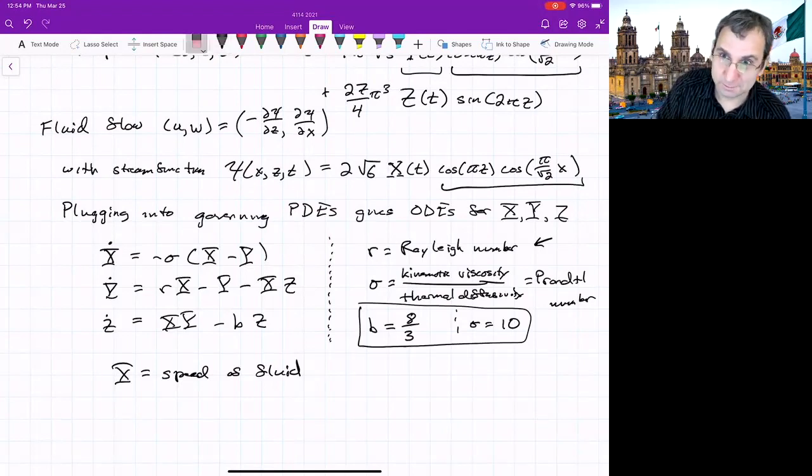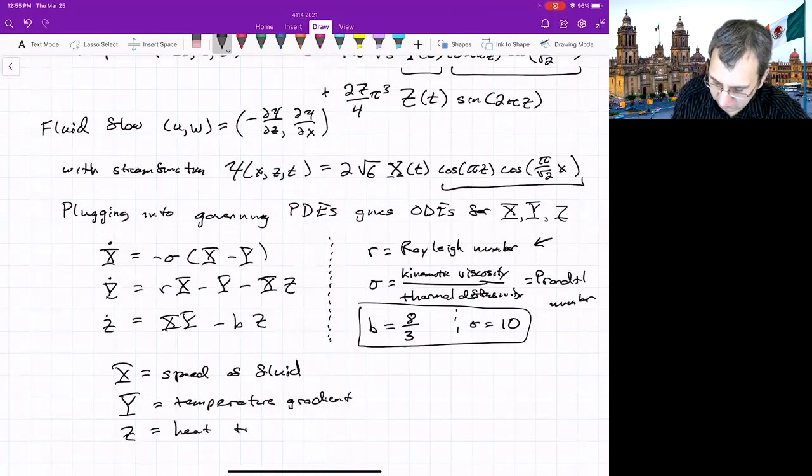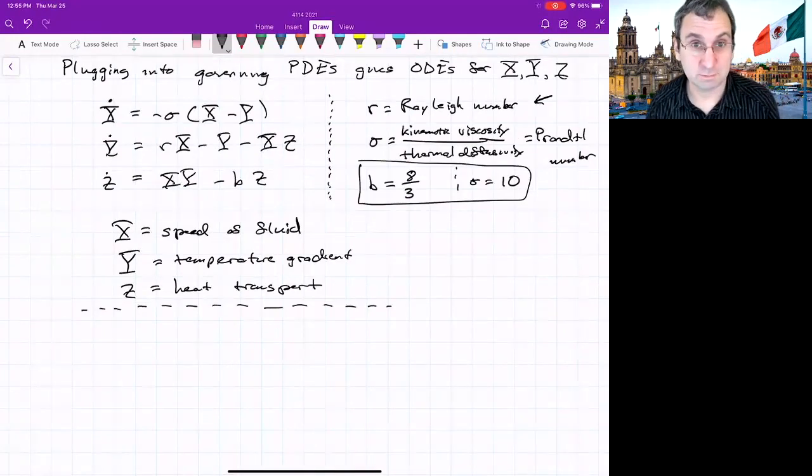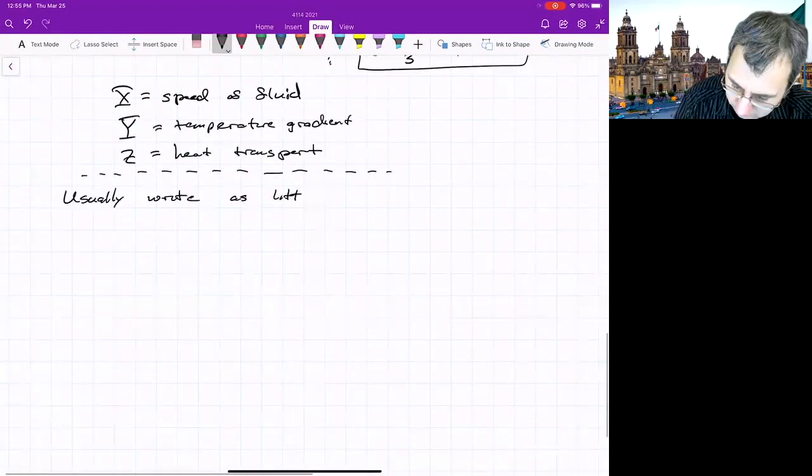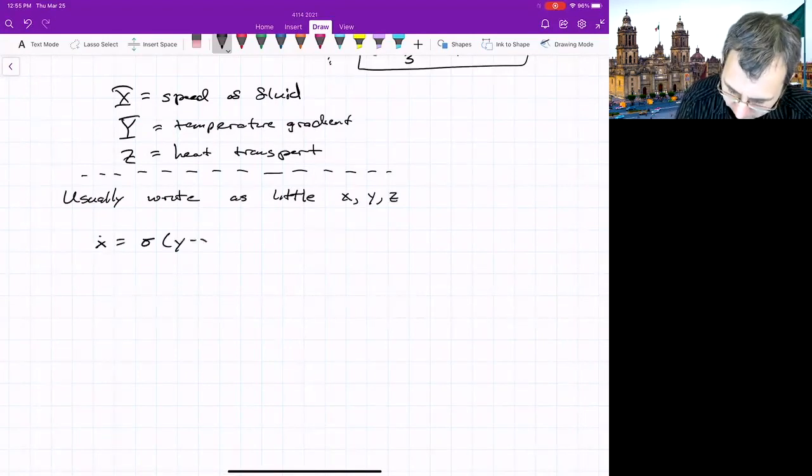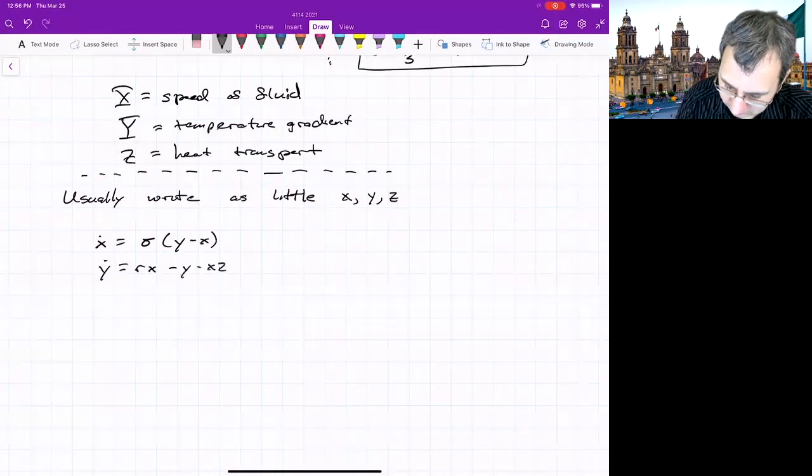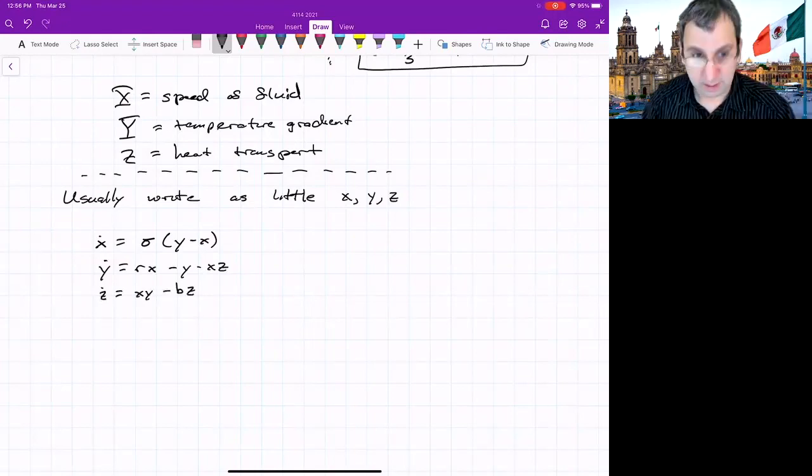And we also typically don't write it in terms of these capital X, Y, and Z. But just for some interpretation, X is related to the speed of the fluid. You know, X is positive, that means it's going one way. If it's negative, that means the rolls are going another way. So think of it like that, roughly. Capital Y, that entered the temperature, so this is the temperature gradient. And then capital Z, this is related to heat transport. So we usually write these in terms of small x, y, and z because it's easier to deal with. And not to be confused with the original little x and little z for the kind of spatial domain that led to the model. So usually write as little x, y, and z. So x dot equals σ(y - x), y dot equals Rx - y - xz, and z dot equals xy - bz. Now there's some things that we can notice about this.